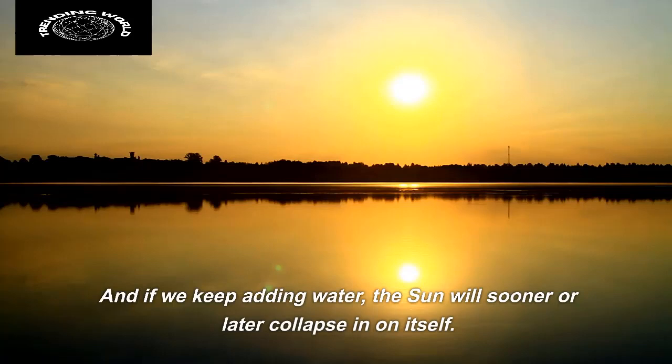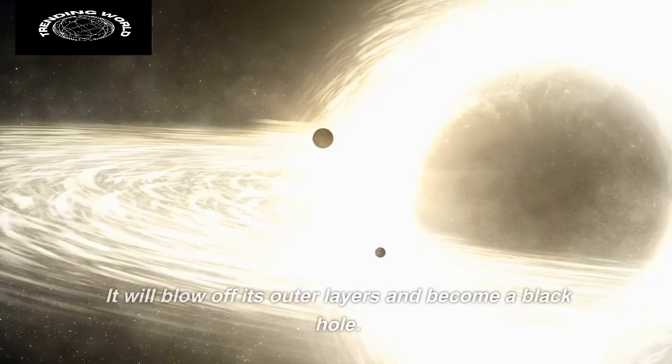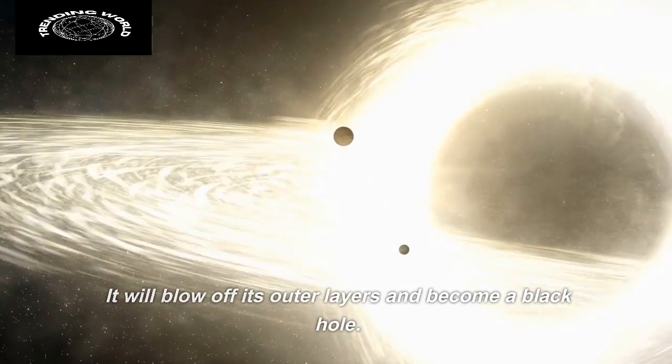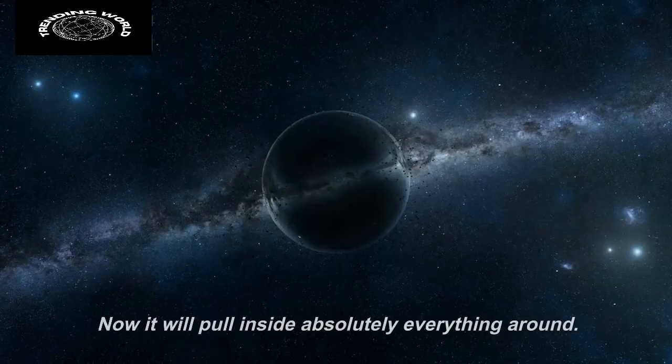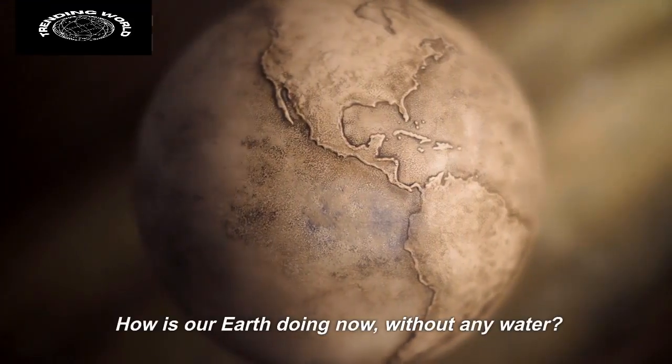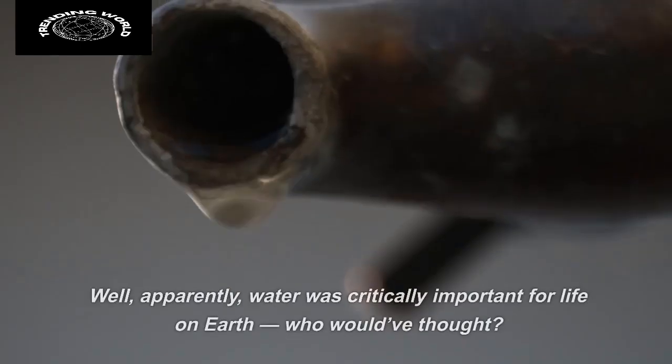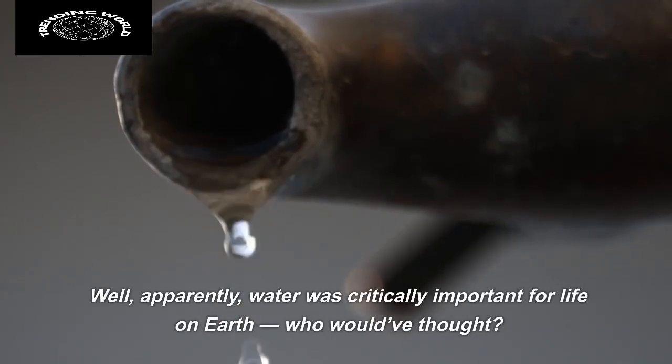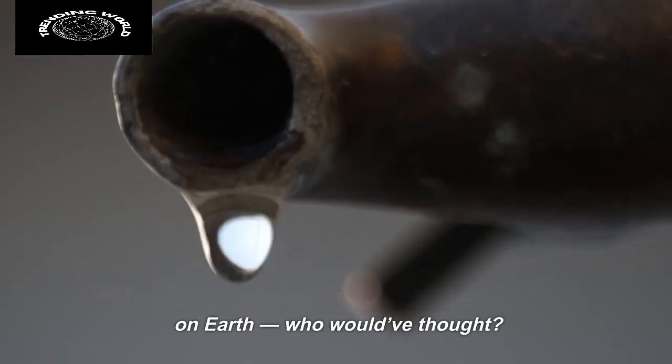And if we keep adding water, the sun will sooner or later collapse in on itself. It will blow off its outer layers and become a black hole. Now it will pull inside absolutely everything around. How is our Earth doing now, without any water? Well, apparently, water was critically important for life on Earth. Who would have thought?